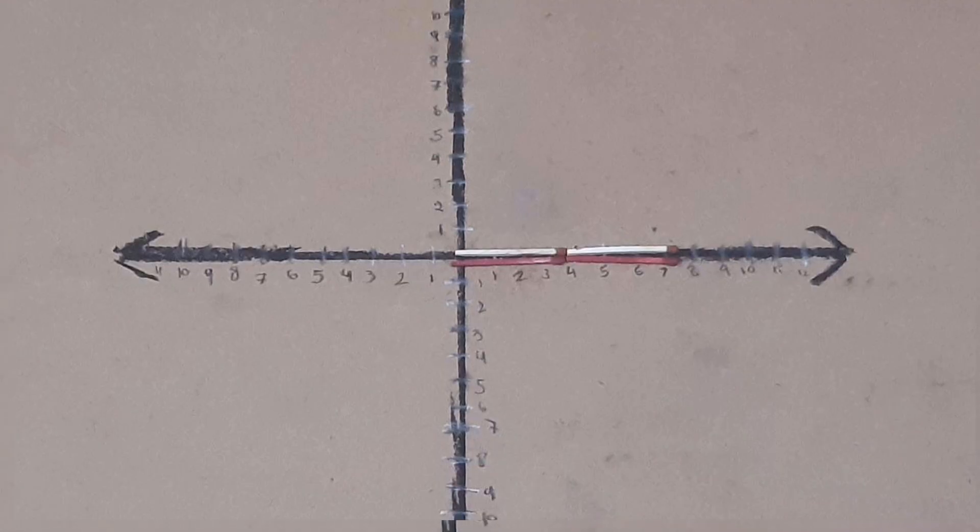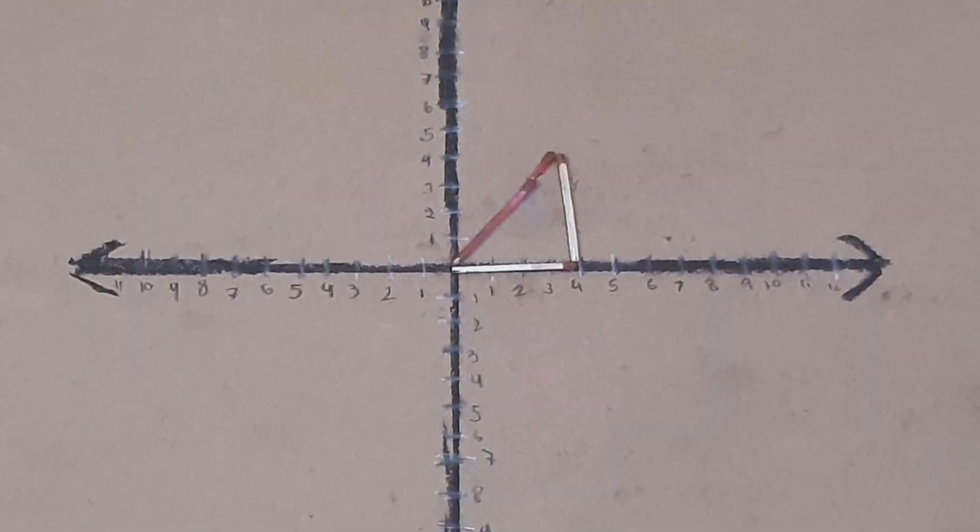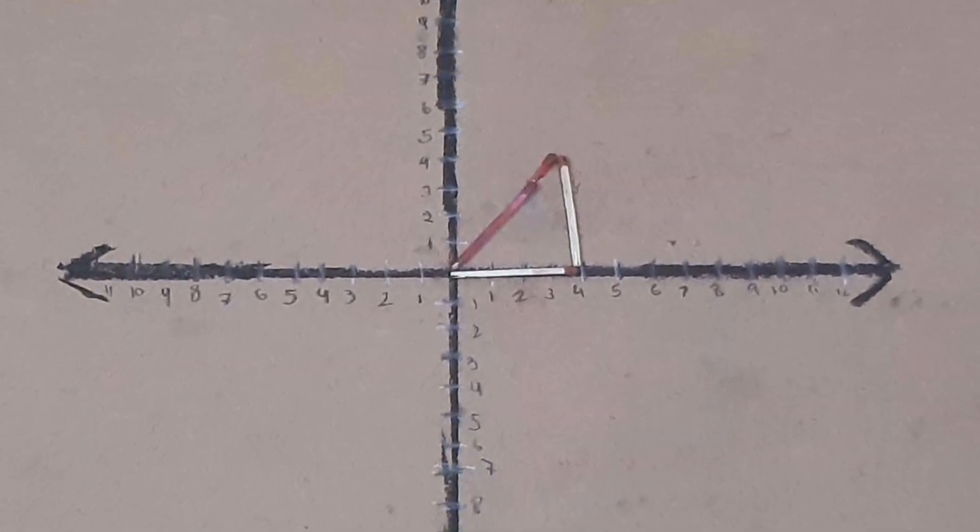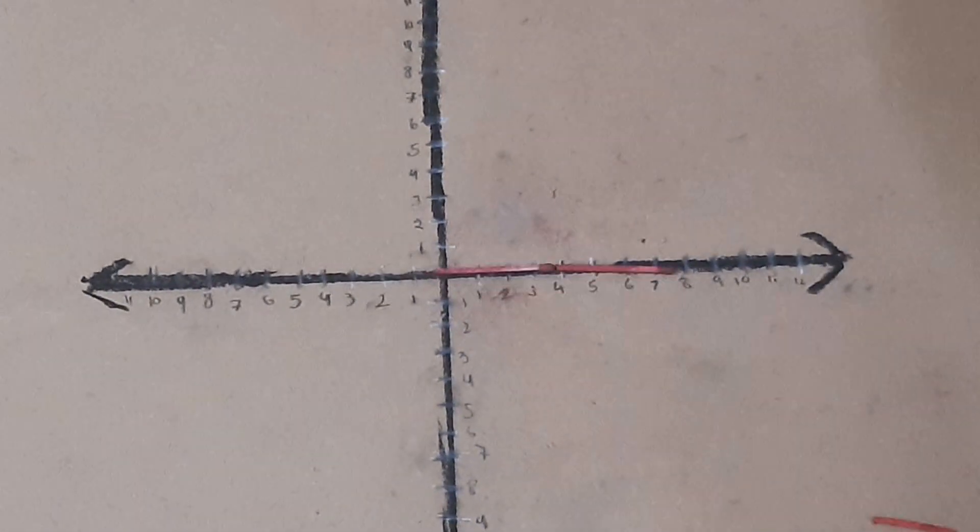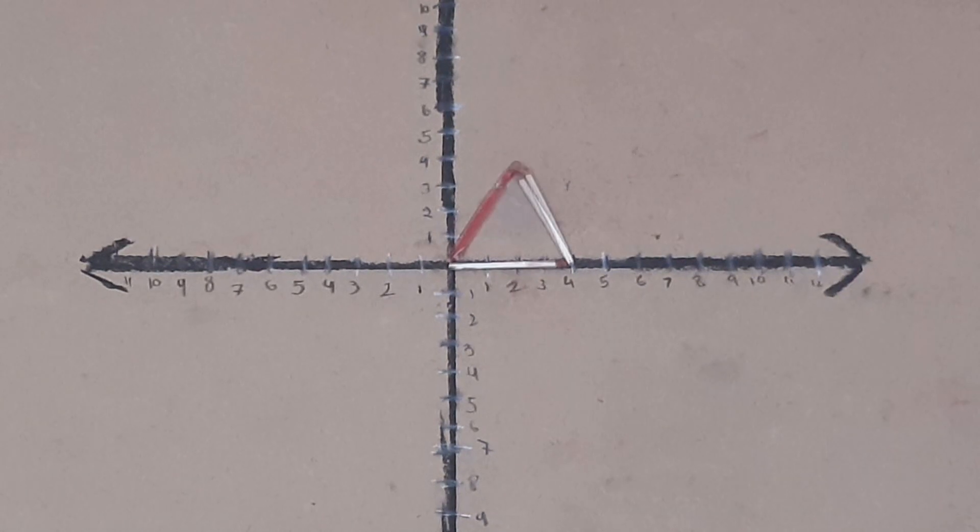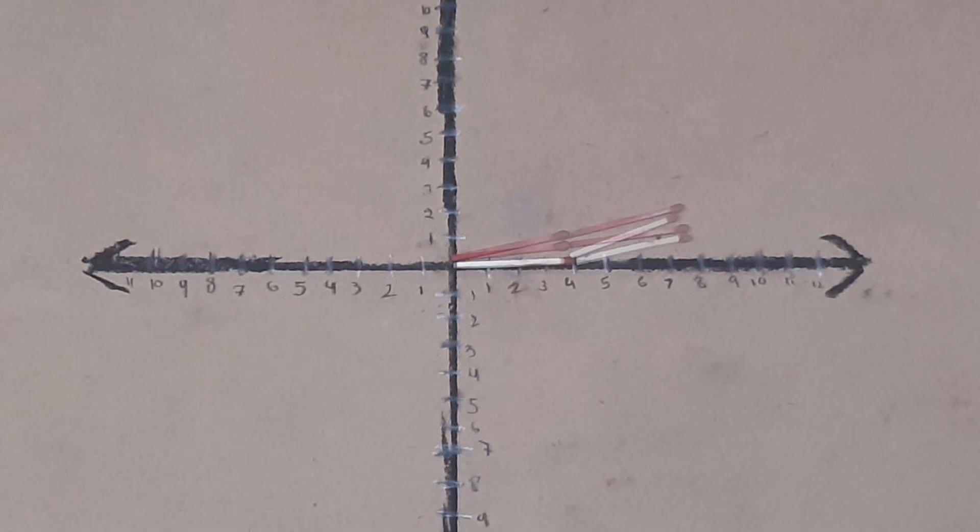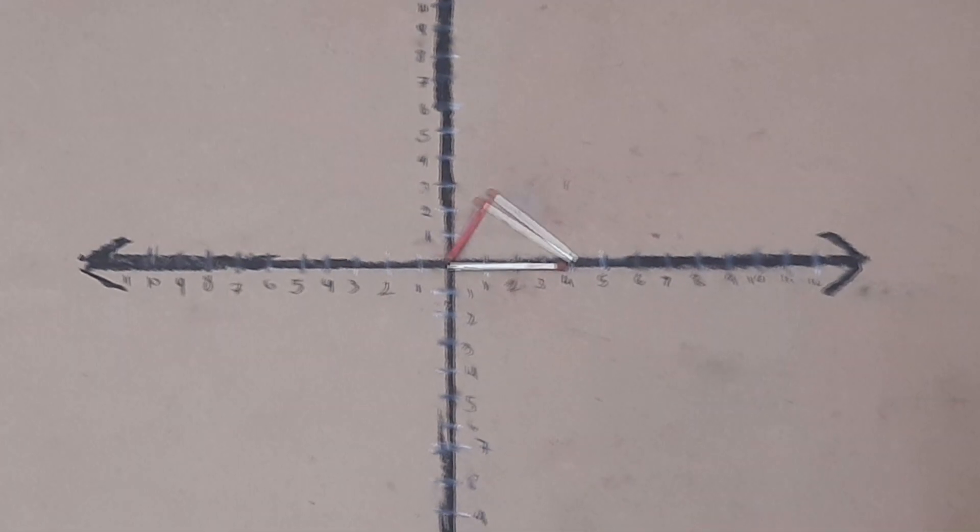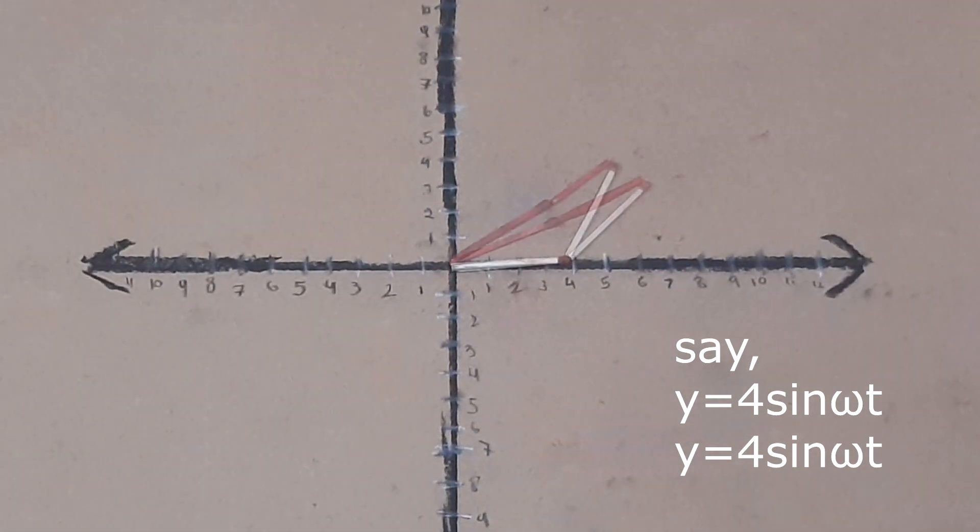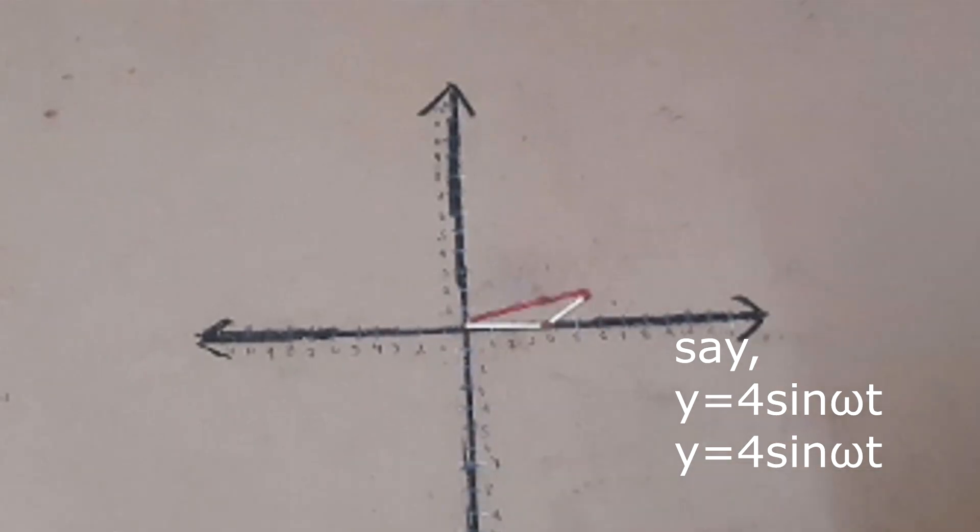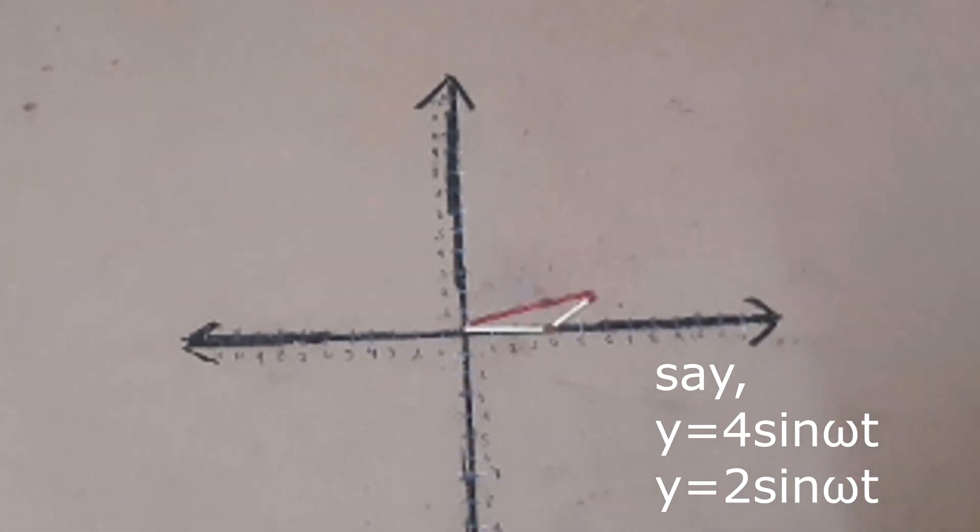This is a position where the phase difference is 0. This is a position where phase difference is pi by 2. As these arrows move, the phase changes, and as the phase changes, the sum, which is the amplitude, changes. This phasor diagram represents the sum of two sine waves with equal amplitude and frequency, and these represent two sine waves with different amplitudes but same frequency.